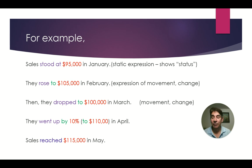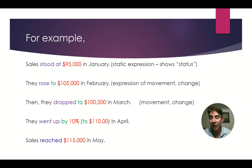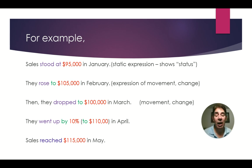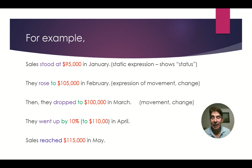Let's put it all together. Sales stood at $95,000 in January — this is a static expression, just one point, not going anywhere yet. They rose to $105,000 in February — an expression of movement or change. Then they dropped to $100,000 in March — again, movement from one point to the next. They went up by 10% to $110,000 in April. Sales reached $115,000 in May, talking about the final point.